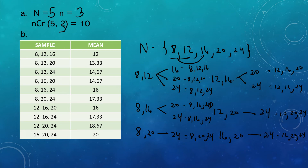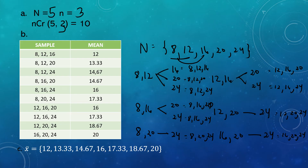Now we find the mean of each sample by adding the three values and dividing by 3. For example, 8+12+16=36, divided by 3 = 12. 8+12+20=40, divided by 3 = 13.33. And continuing until 16+20+24=60, divided by 3 = 20. After computing all means, we rewrite them in ascending order: 12, 13.33, 14.67, 16, 17.33, 18.67, and 20.